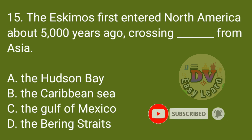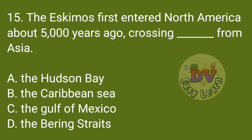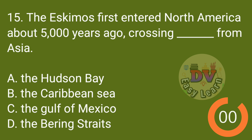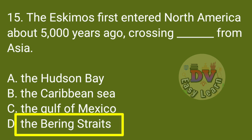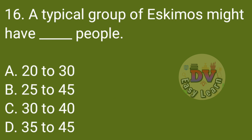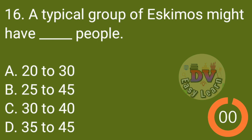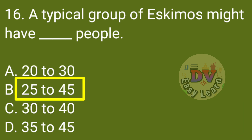Q15: The Eskimos first entered North America about 5,000 years ago, crossing from Asia. Q16: A typical group of Eskimos might have how many people? Correct answer: 25 to 45.